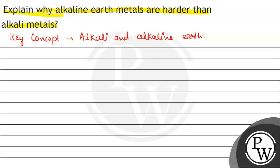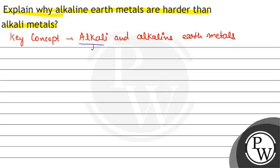Alkaline earth metals. Now, let us see what are alkaline metals and alkaline earth metals. Alkali metals are the first group elements — they are the elements present in the first group. And alkaline earth metals are the second group elements — the elements present in the second group.